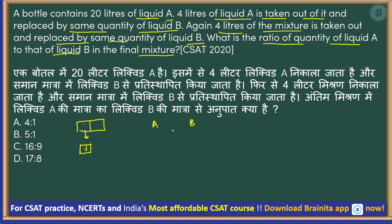So we have A and B. Original is 20 liters of A. Now 4 liters are taken out and replaced by 4 liters of B. In the new mixture, A has lost 4 liters, so A is 16 liters and B is 4 liters. So this first step gives us 16 liters of A and 4 liters of B totaling 20 liters.